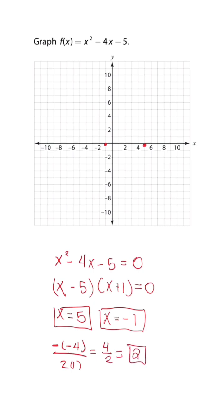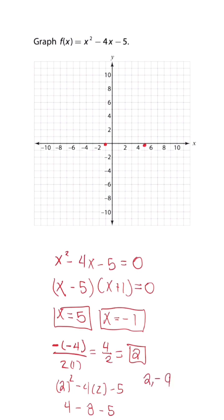When x equals 2, that's the x-coordinate for the vertex. We'll plug this back in: 2 squared minus 4 times 2 minus 5, which gives us 4 minus 8 minus 5. When we simplify this, we get negative 9. So the vertex is at (2, -9).